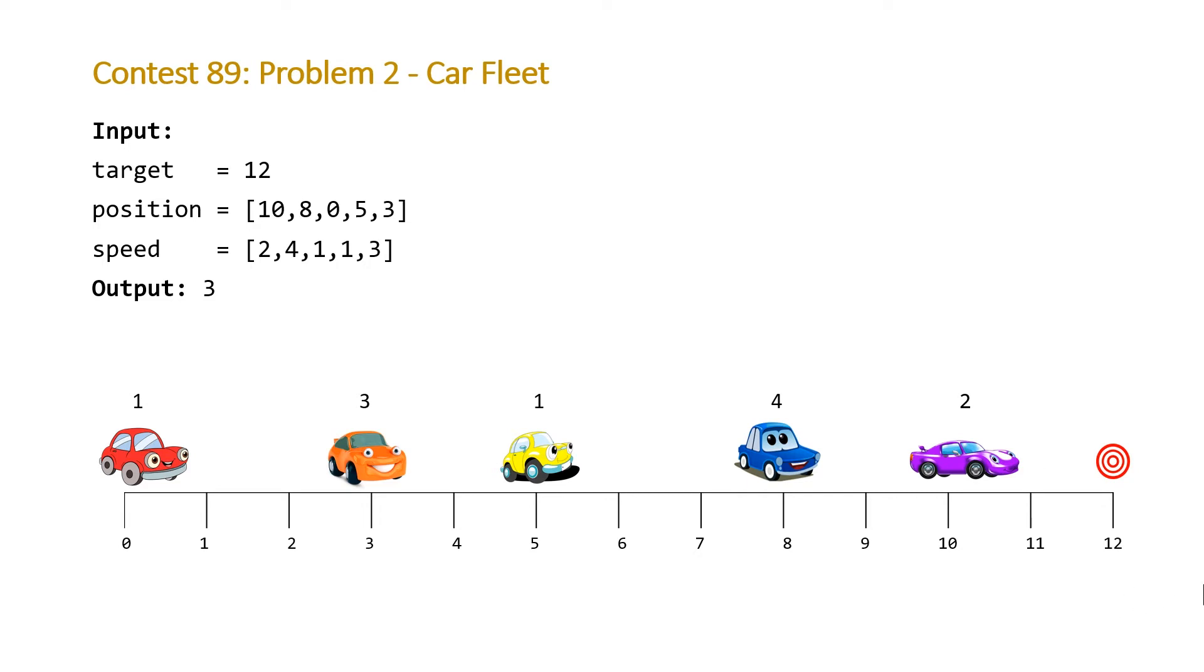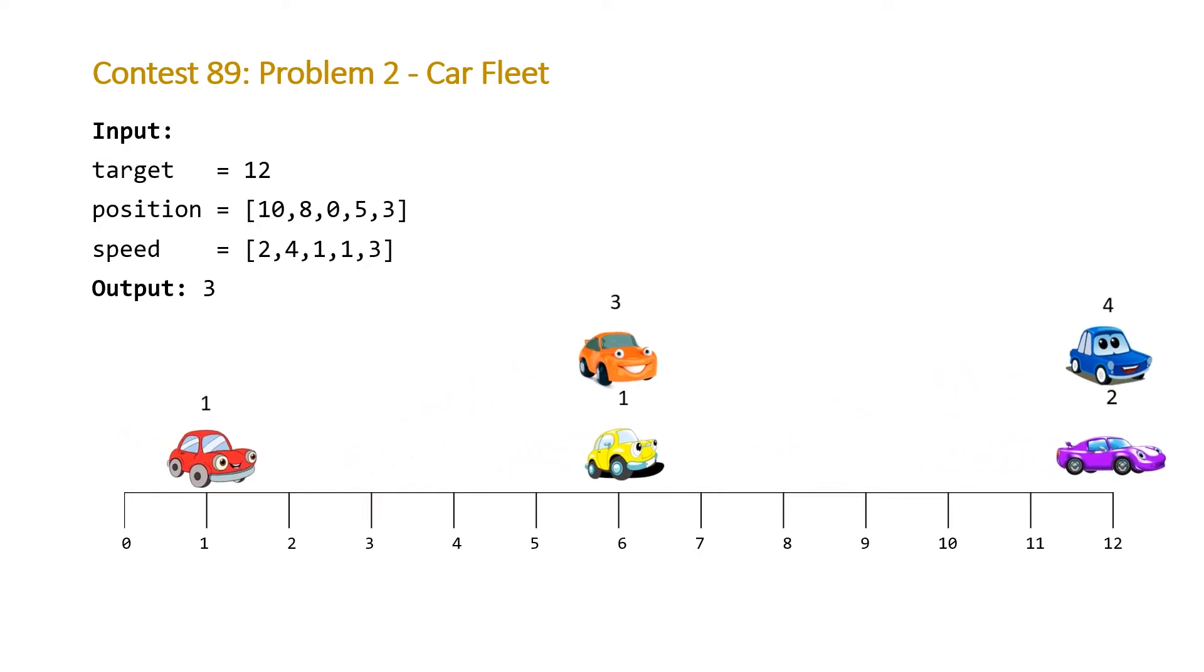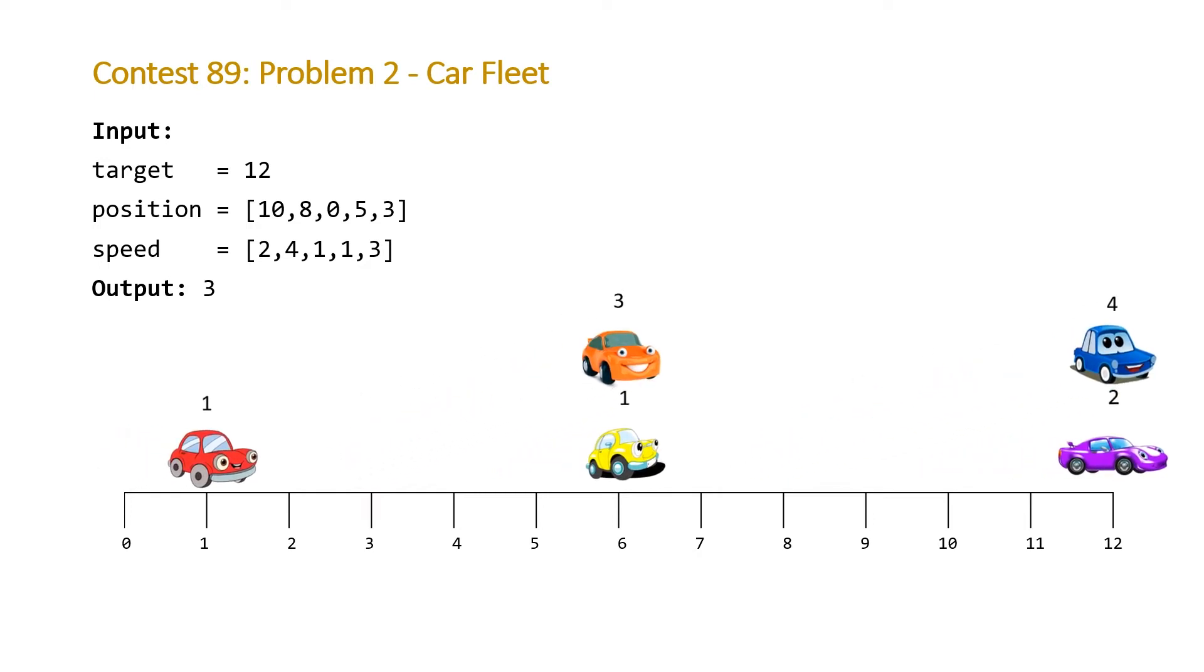And so obviously, we have these five different cars, and above them are the speeds. If we process this one hour at a time, it'll look as follows. After the first hour, this is what the movement will be. The purple and blue car are going to end up at their target destination. The orange and yellow car, due to the fact that orange is driving a lot faster than the yellow car, are going to form a fleet, and they're going to move together. And the red car is just moved one mile. And so this is going to be our first fleet.